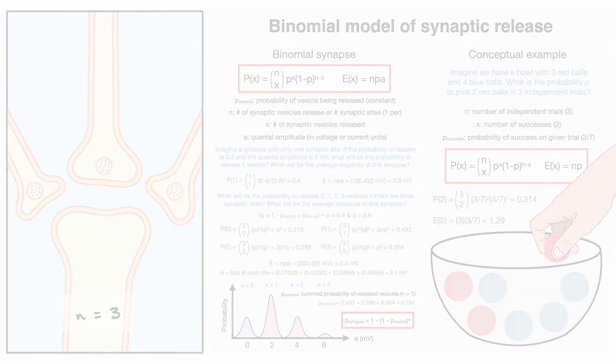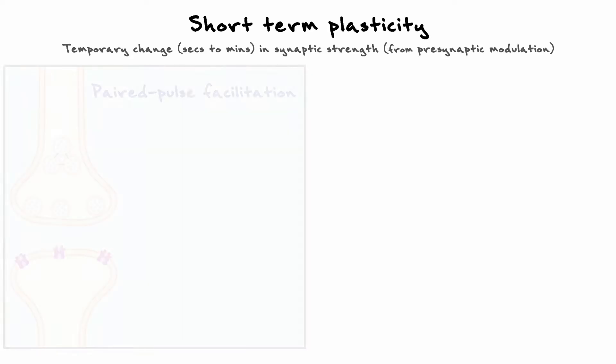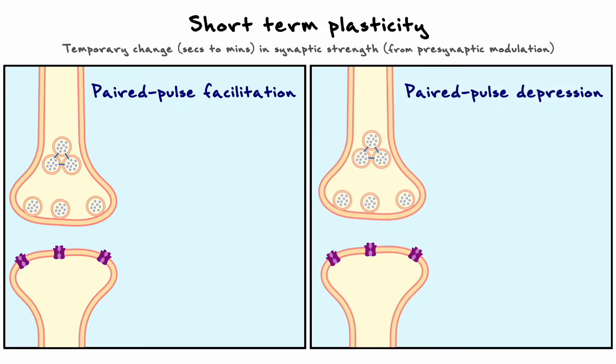Alright, now that we understand this binomial model, let's begin our discussion on plasticity. A fundamental aspect of plasticity is that it can happen on many timescales. The two broad ways to classify these timescales is through the short-term and the long-term. Accordingly, let's begin with short-term plasticity, which corresponds to events that last on the scale of a few minutes or less. Generally speaking, short-term plasticity occurs on the presynaptic terminal, and the two main forms are called paired pulse facilitation and paired pulse depression.